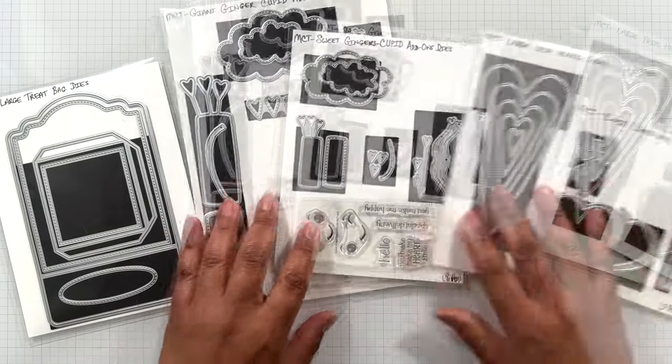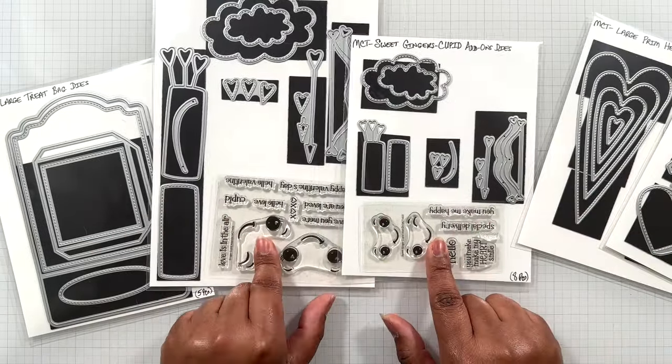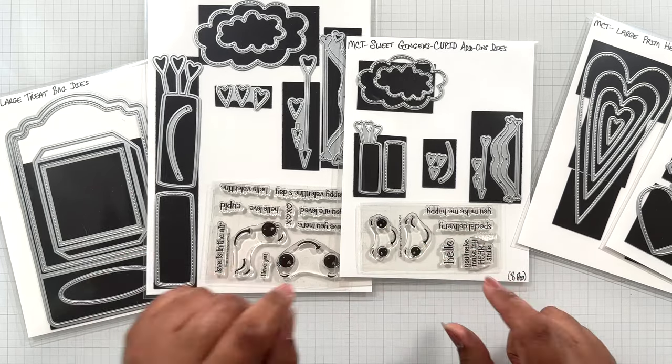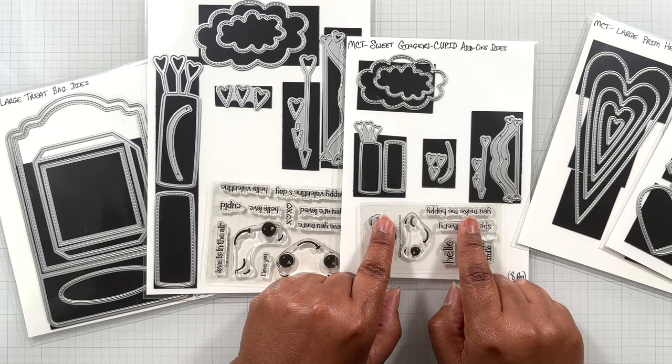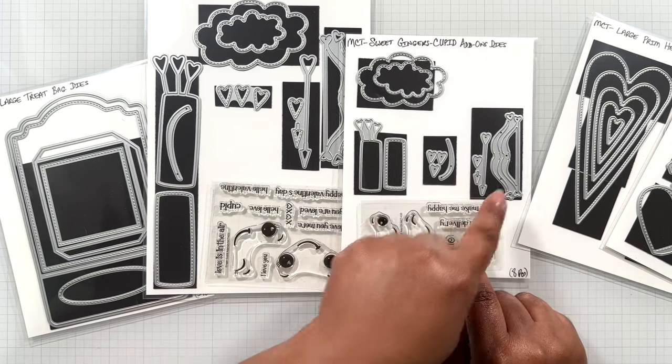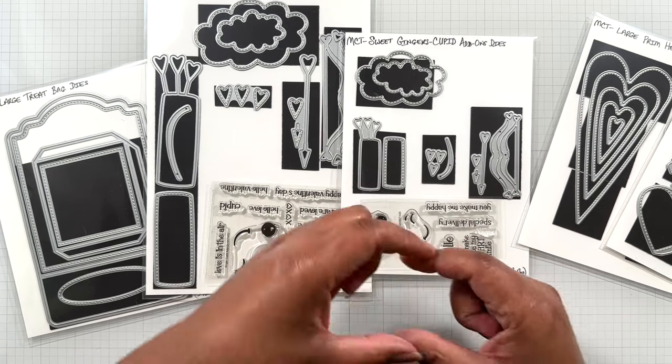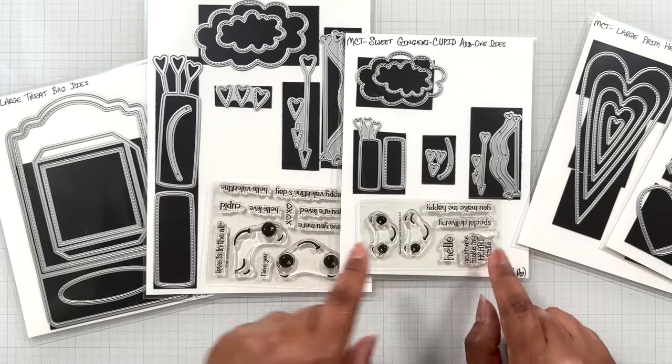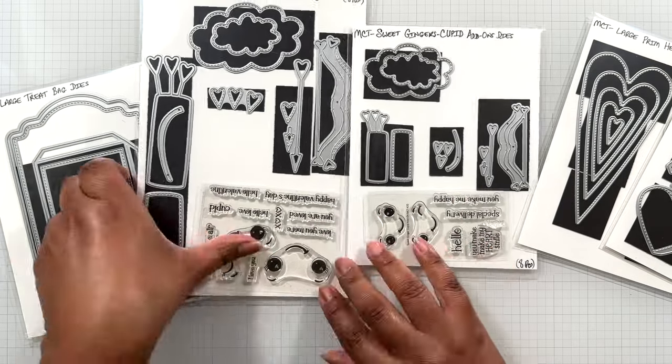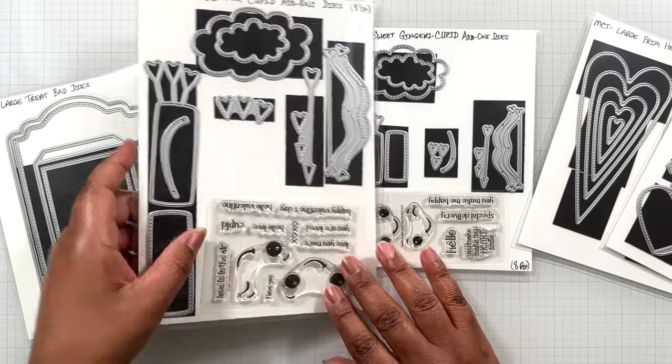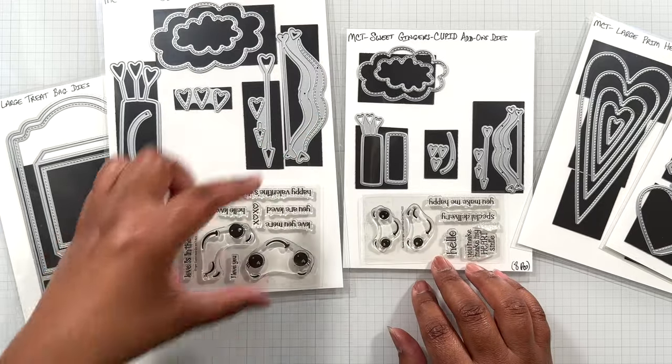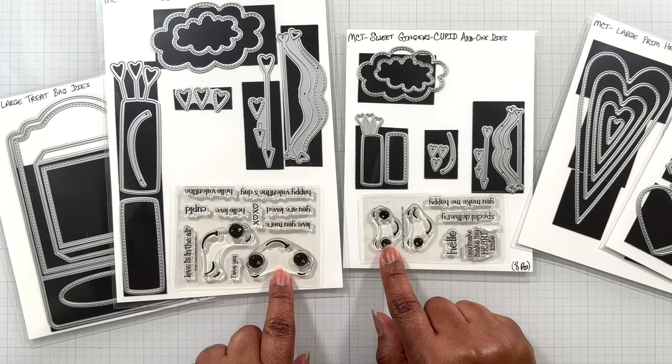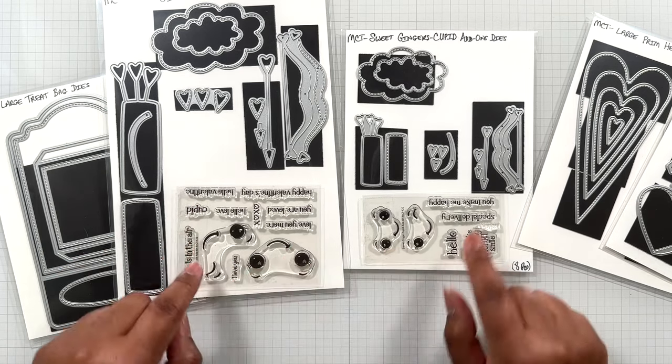Here are the five die sets. This is the Cupid add-on for the gingerbreads. Not for the smallest gingerbread but for the medium and the giant gingerbread. There is Sweet Ginger's Cupid add-on dies which comes with the bow and arrow and the little holder for your arrow or satchel and a strap for the satchel. You even get a stamp set. Then there is the giant ginger Cupid add-on. Same exact set of dies and the stamps but the stamps give you faces with hearts in the eyes but different sentiments.